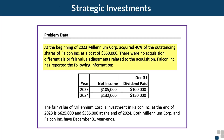Here's the data for our problem. At the beginning of 2023, Millennium Corp. acquired 40% of the outstanding shares of Falcon Inc. at a cost of $550,000. There were no acquisition differentials or fair value adjustments. Falcon recorded net income of $105,000 and paid dividends of $100,000 in 2023, and net income of $132,000 and dividends of $150,000 in 2024. The fair value of Millennium's investment in Falcon was $625,000 at the end of 2023 and $585,000 at the end of 2024. Both companies have December 31st year ends.